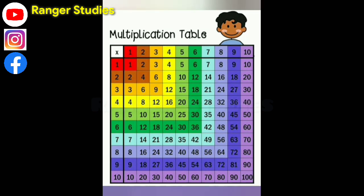9 1s are 9, 9 2s are 18, 9 3s are 27, 9 4s are 36, 9 5s are 45, 9 6s are 54, 9 7s are 63, 9 8s are 72, 9 9s are 81, 9 10s are 90.